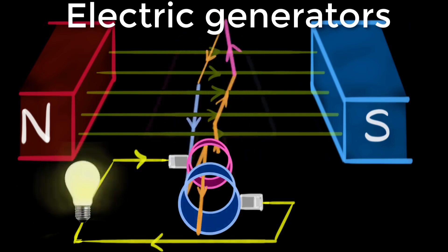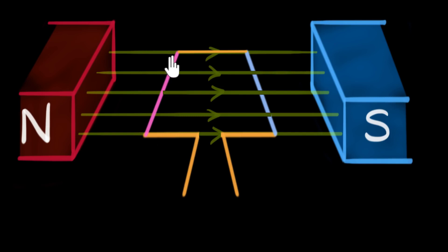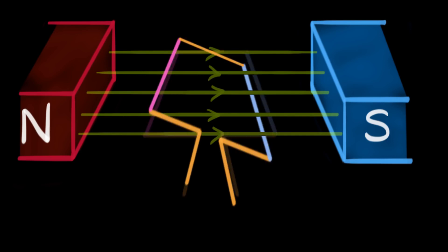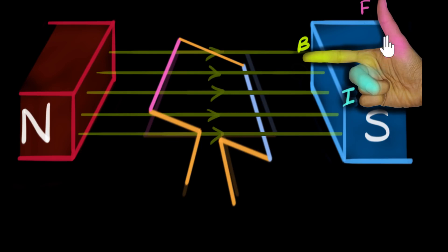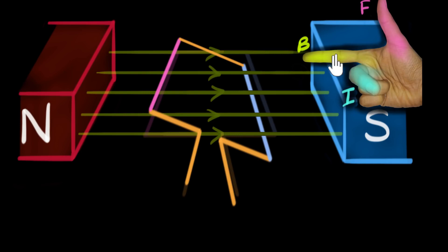Let's look at them in detail. Let's figure out in what direction a current gets induced in this coil once it starts rotating clockwise. We use Fleming's right-hand generator rule: stretch the fingers of your right hand so they are perpendicular to each other. The thumb represents the direction of motion of the wire, the forefinger gives the direction of the magnetic field, and the middle finger gives the direction of the current.